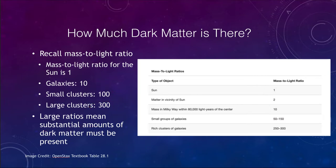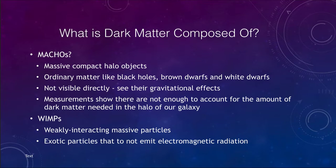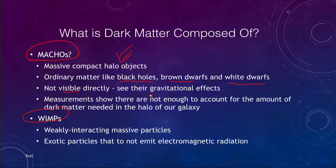What could this dark matter be composed of? There are a couple of different possibilities: the MACHOs and the WIMPs. MACHOs are massive compact halo objects — essentially ordinary matter, things like black holes, brown dwarfs, and white dwarfs. These are very hard to see and incredibly faint, so we wouldn't see them directly, but we would see their gravitational effects. However, measurements show that there are simply not enough of these to account for the amount of dark matter needed in the halo of our galaxy, meaning they probably don't work for other galaxies either.